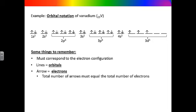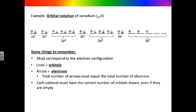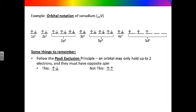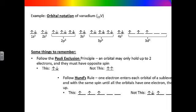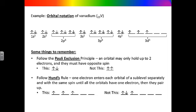The arrows represent the electrons. Notice that there are 23 arrows because vanadium has 23 electrons. Notice that some of the orbitals in the d sublevel are empty, but they are still drawn. Each orbital can only hold up to two electrons, and they must have opposite spin, shown by one up arrow and one down arrow. This is called the Pauli exclusion principle. When the d sublevel is not full, electrons are placed one at a time into each orbital until each orbital has one electron. These electrons have the same spin, represented by all up arrows.